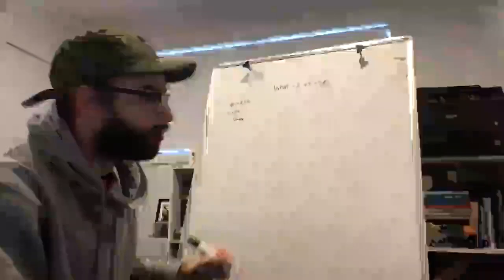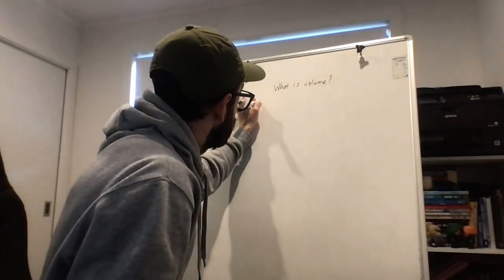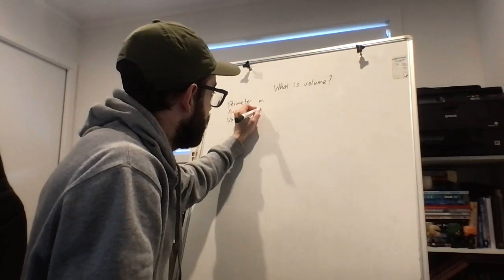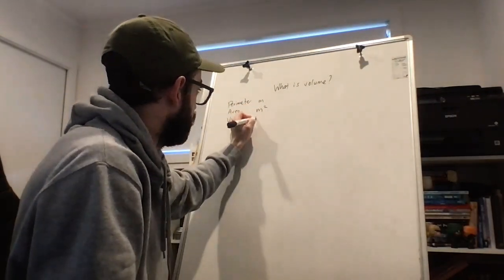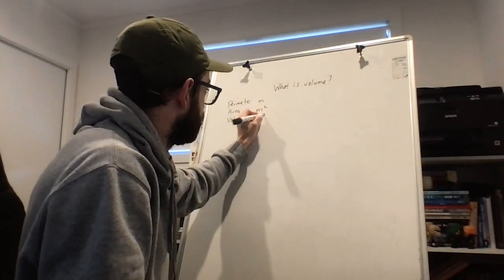Now just a little thing to remind us: when we measure perimeter, we measure in, say for example, meters. When we're doing area it is meters squared, and when we do volume it is cubed.